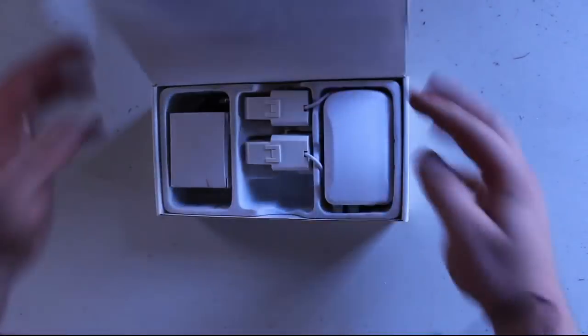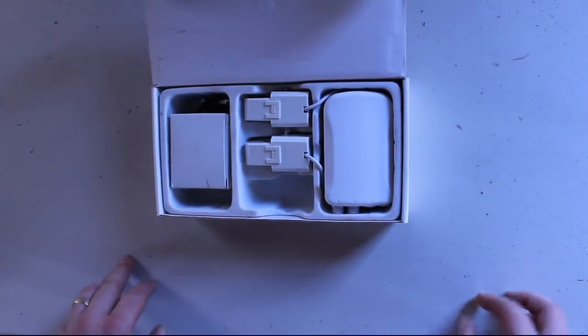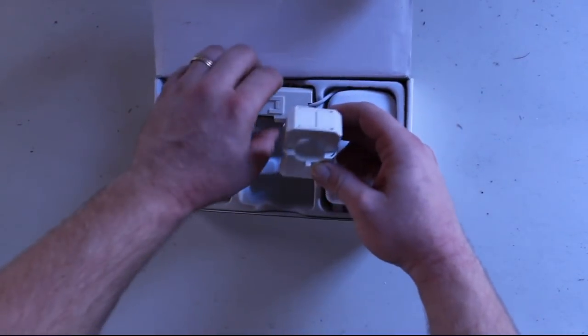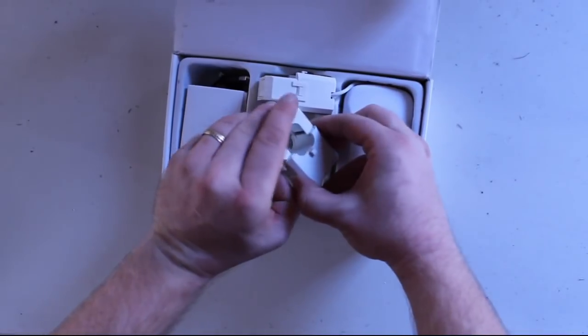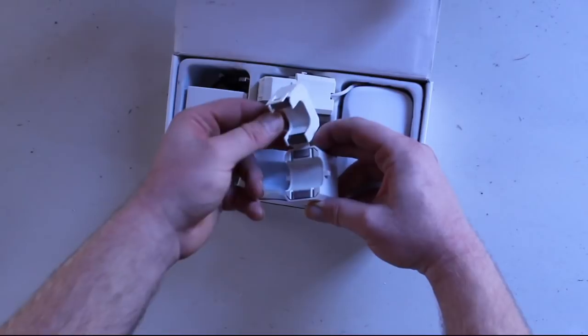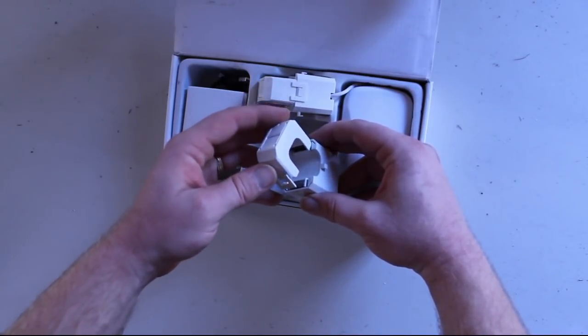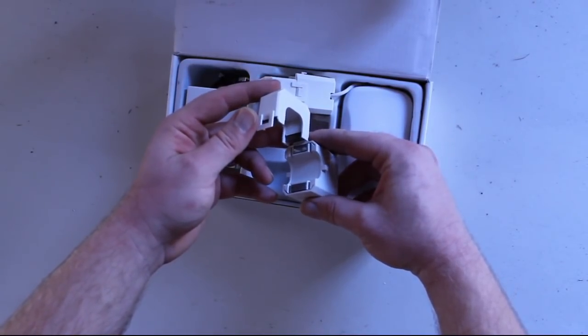So this is the unit. It came packaged in this box. It basically comes with these two split-core current transformers. These pop open and go around the main power lines coming into the main breaker in your electrical panel.